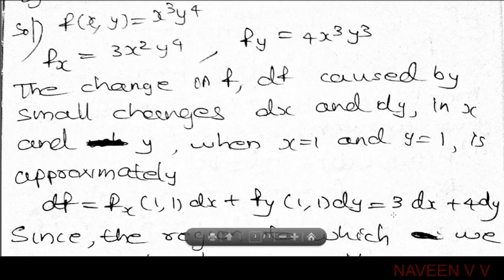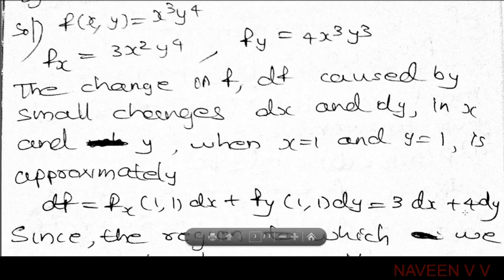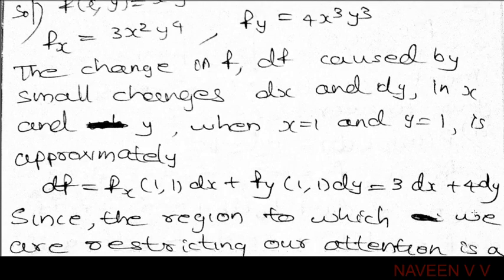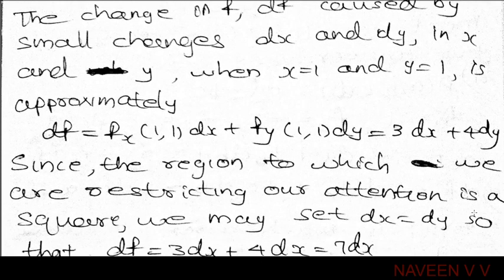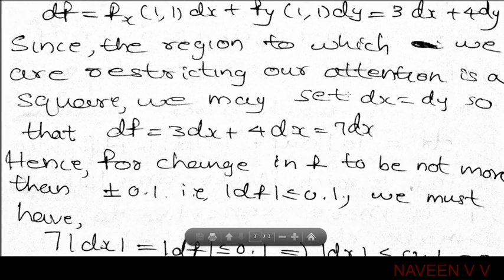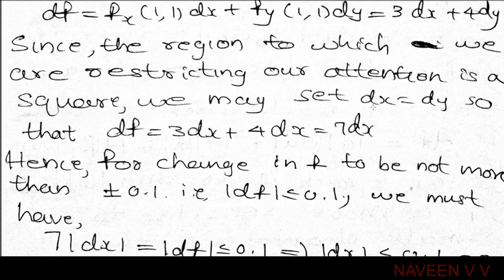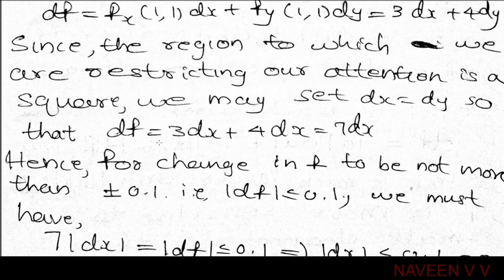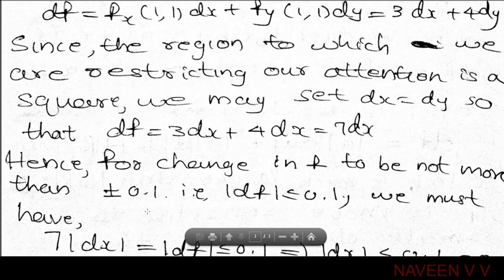Substituting at (1,1): fx(1,1) = 3 and fy(1,1) = 4. So df = 3dx + 4dy. For a square, |dx| = |dy| = dx. The maximum value of df is 3dx + 4dx = 7dx.